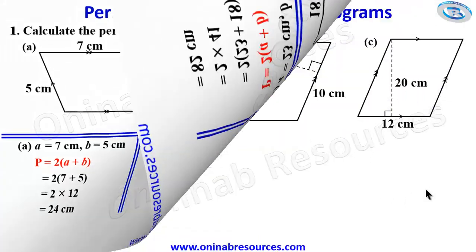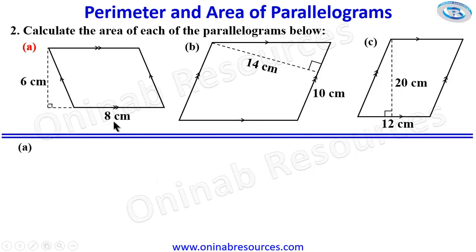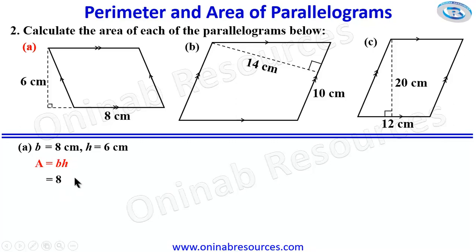Problem 2: Calculate the area of each of the parallelograms below. We also have 3 parallelograms. Starting with part A — we are given the base as 8 cm and the height as 6 cm. The formula for area is base times height, so we have 8 times 6, which gives 48 square cm as the area of the parallelogram in part 2A.